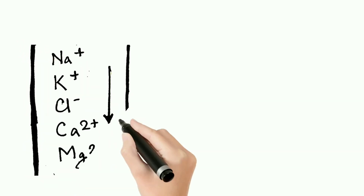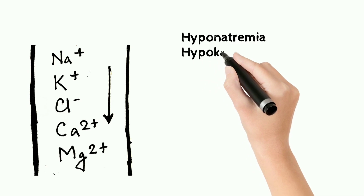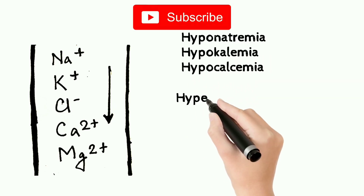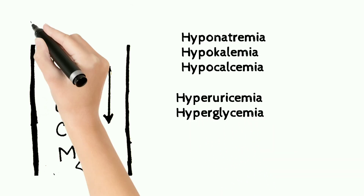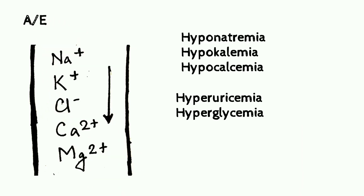The adverse effects include hyponatremia, hypokalemia, hypocalcemia, hyperuricemia, and hyperglycemia. The most common are hypokalemia and hyperuricemia. To counteract the hypokalemia, spironolactone is generally used in combination with furosemide.